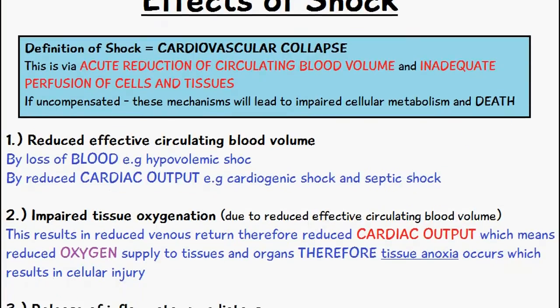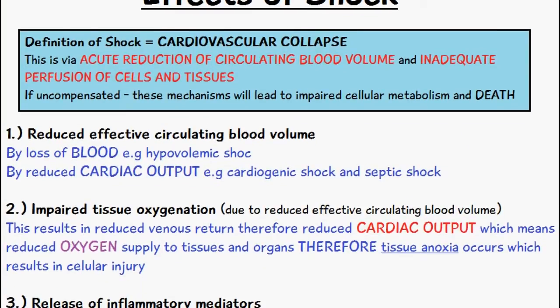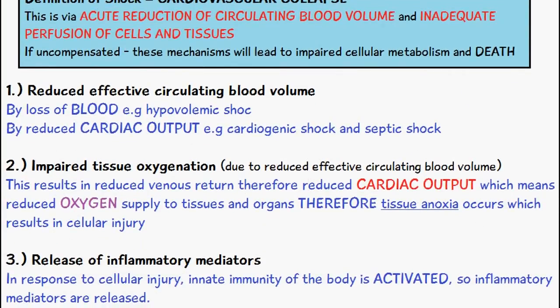Then we have impaired tissue oxygenation, which is due to the reduced effective circulating blood volume. This results in reduced venous return and therefore reduced cardiac output, which means reduced oxygen supply to tissues and organs. As a result, tissue anoxia occurs and this leads to cellular injury.